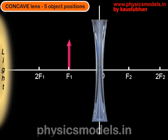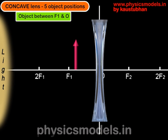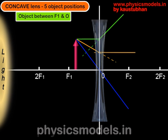We have covered a lot of positions of the object, and the last position is between F1 and O. The object is slid very close to the lens. We draw our favorite three rays — the green ray, the orange ray, and the blue ray. The green ray diverges upwards at the same angle since it's parallel to the principal axis. The orange ray aimed at F2 travels parallel to the principal axis, and the blue ray goes through O without any refraction. When we draw the dotted lines and find the intersection, we get an image which is virtual, erect, and diminished, with its position between O and the object.